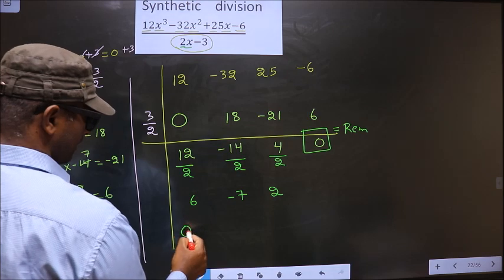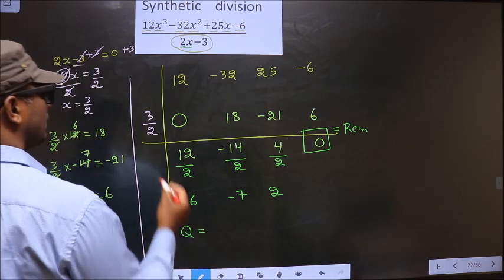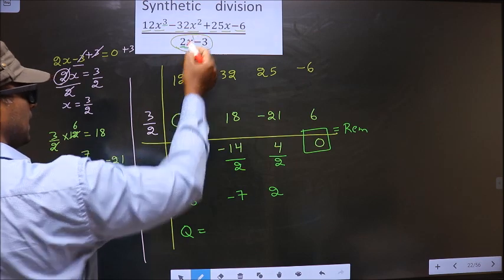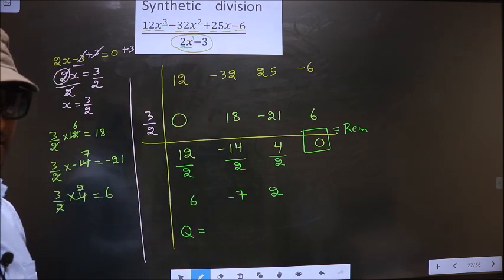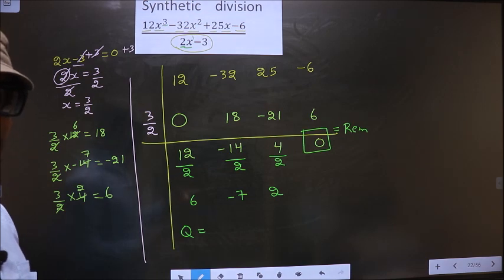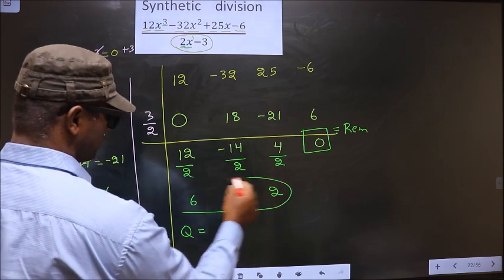So now our quotient is... Numerator is cubic. Denominator is linear. So quotient will be a quadratic. And the coefficients for that quadratic are these numbers.